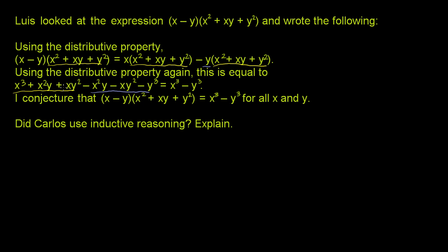And then he saw, it looks like, that this term x²y cancels out with the minus x²y and the xy² cancels out with the negative xy². And he saw that it equals x³ minus y³. And then he wrote down,